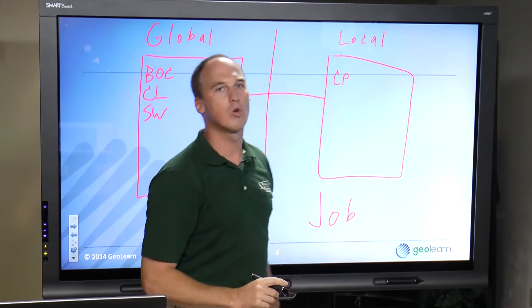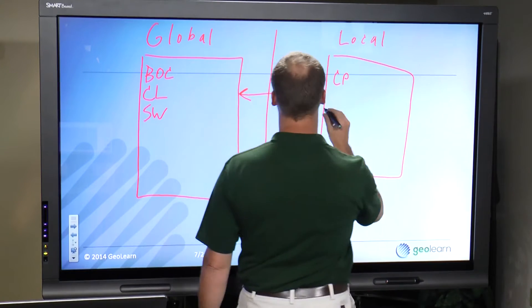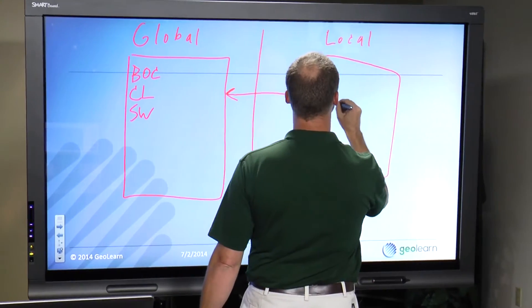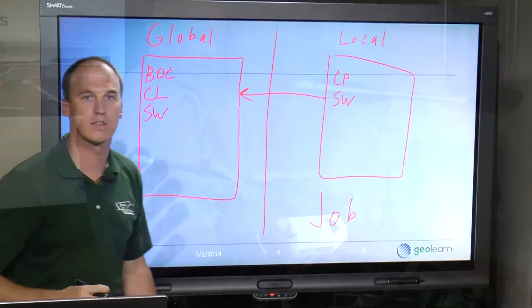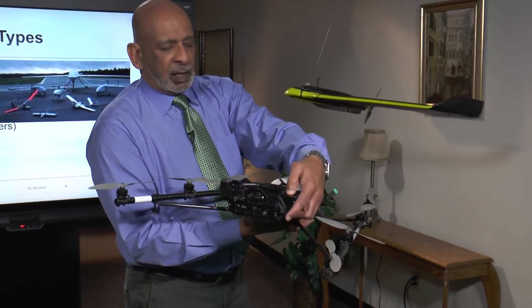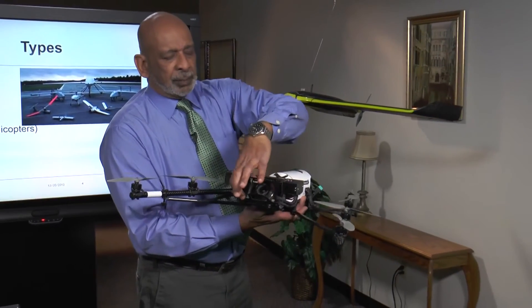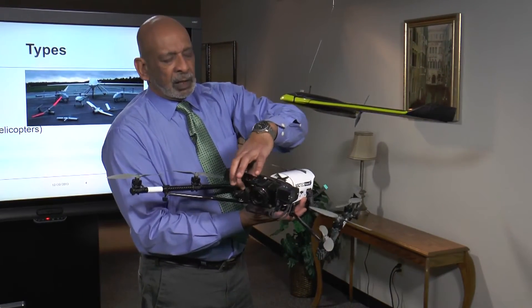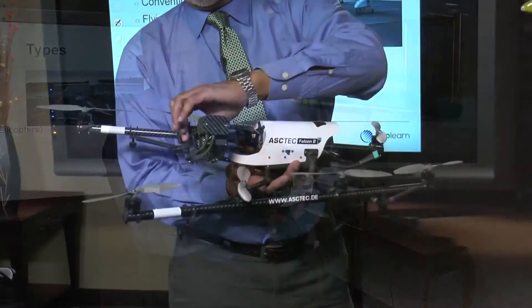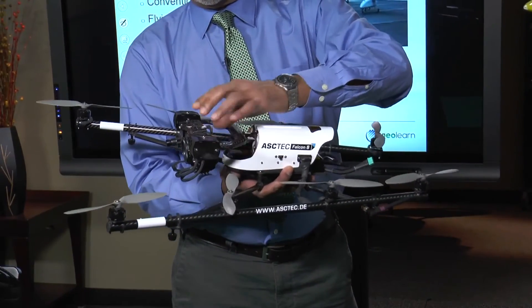So in your local job, when you collect a point and you collect SW, it gets added to the local code list. You can have this camera either point down, point up, or straight ahead, without any obstruction from the frame of the aircraft itself.